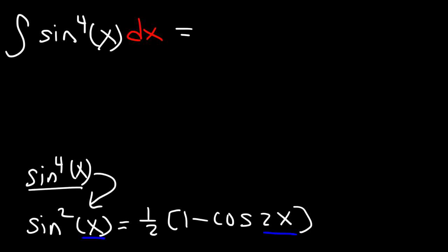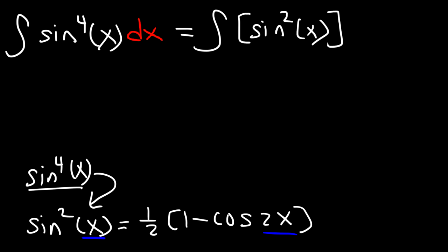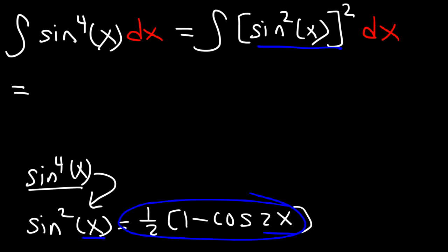Sine to the fourth is basically sine squared of x raised to the second power, because when you raise one exponent to another you multiply the two exponents, and 2 times 2 is 4. Our next step is to replace sine squared with this expression, so we have the integral of one half times (1 minus cosine 2x), and this entire thing is squared.